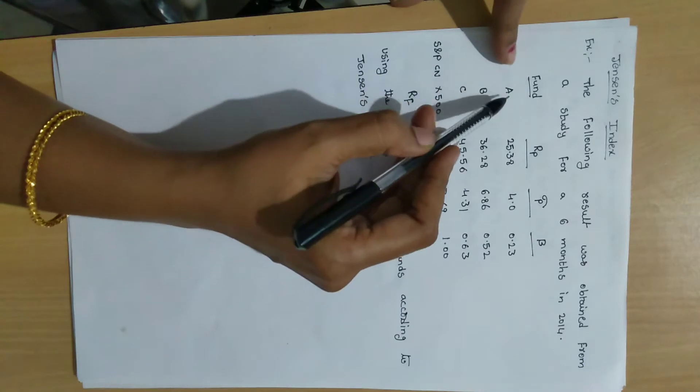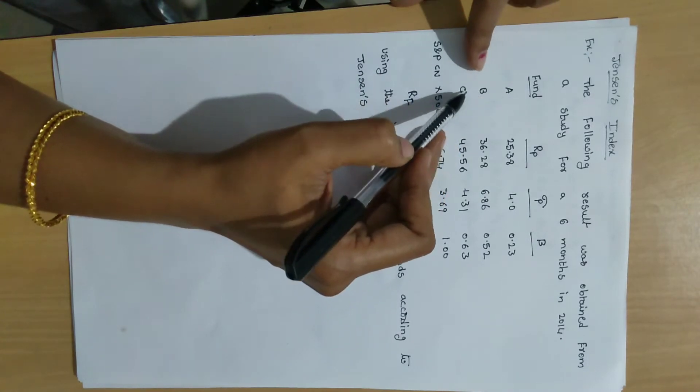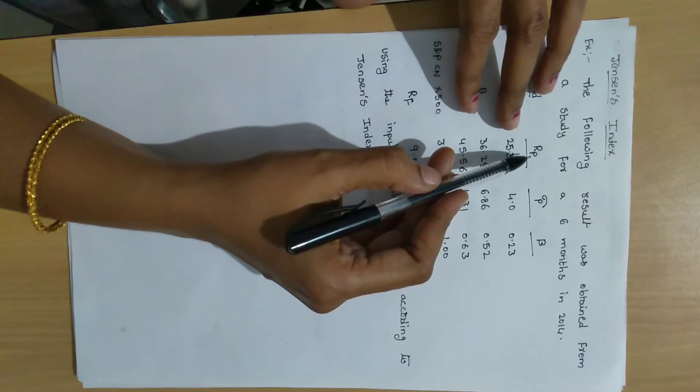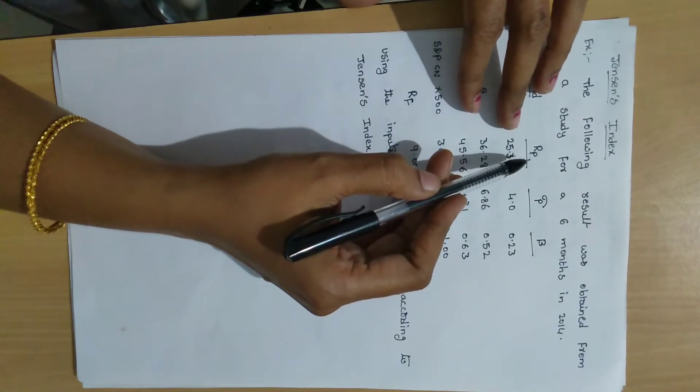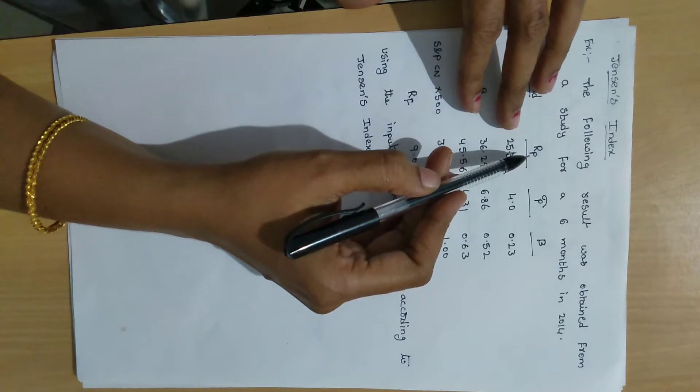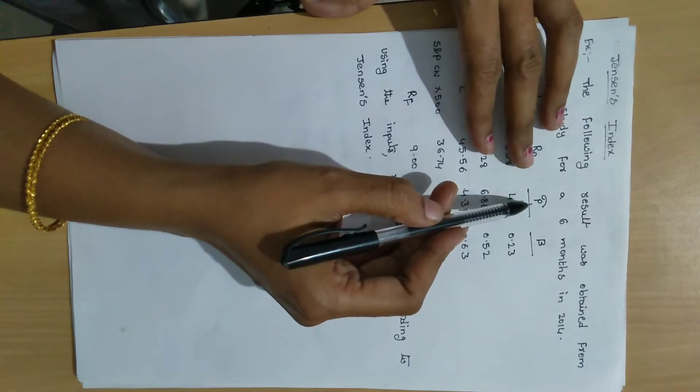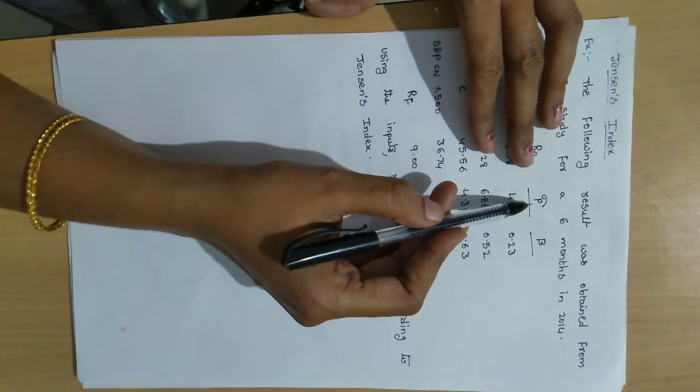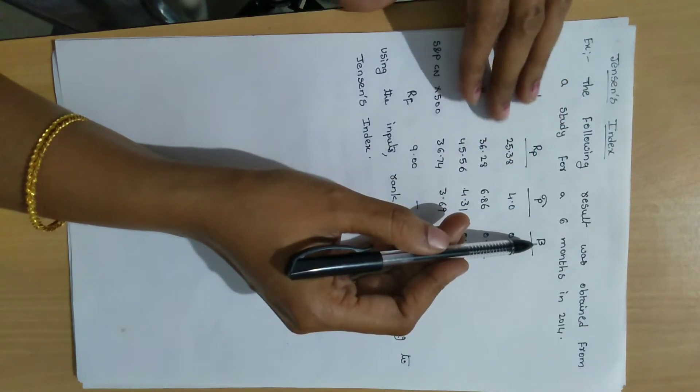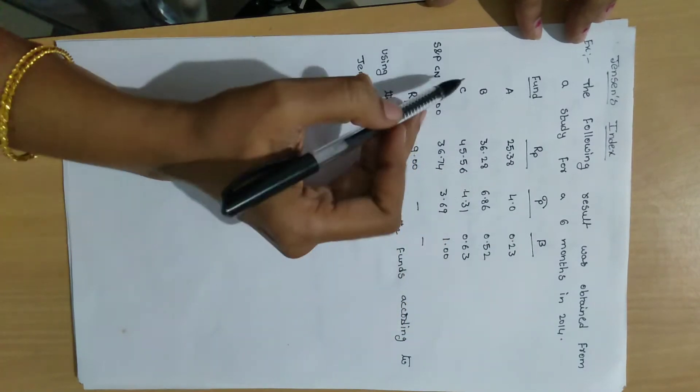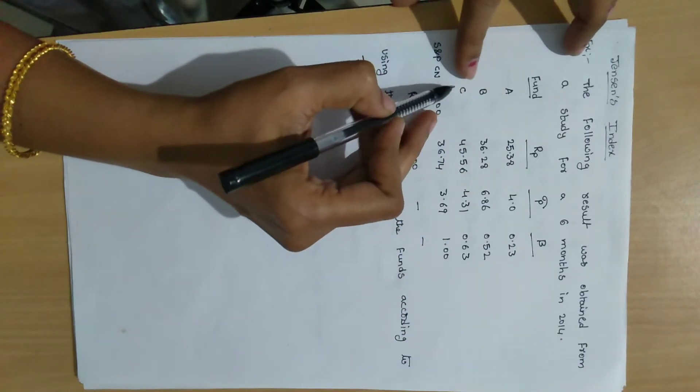In this problem we have three funds here: A, B, C. Here RP values - RP means fund returns. So this is the portfolio average rate of returns. Sigma P means standard deviations. Beta coefficient means systematic risk. So here three funds are given in the problem.